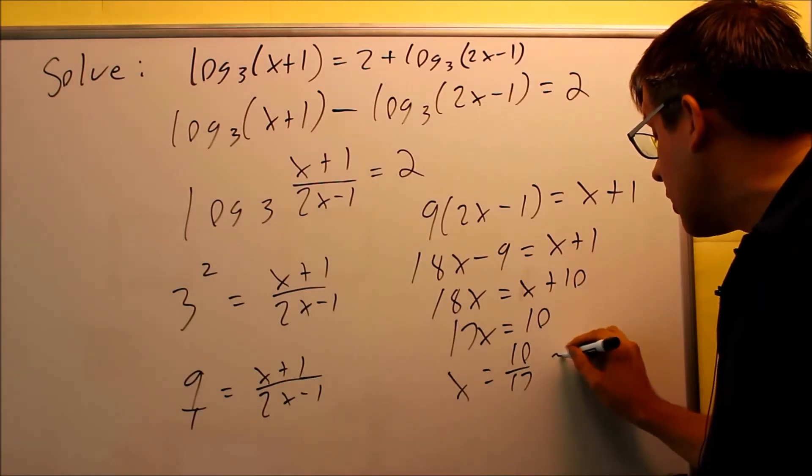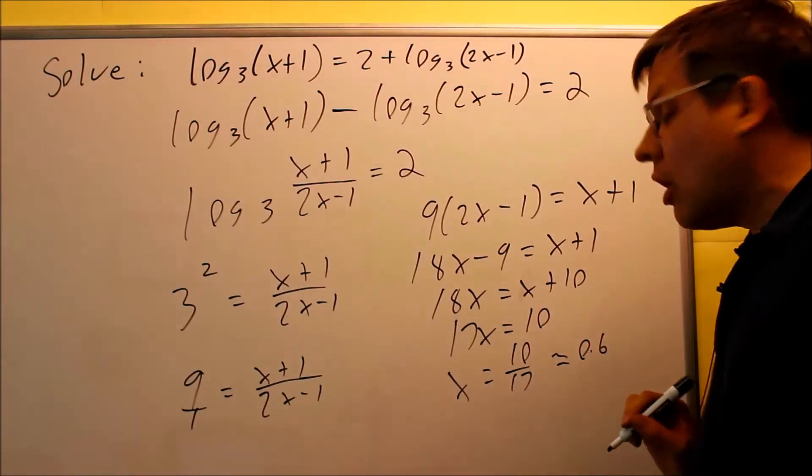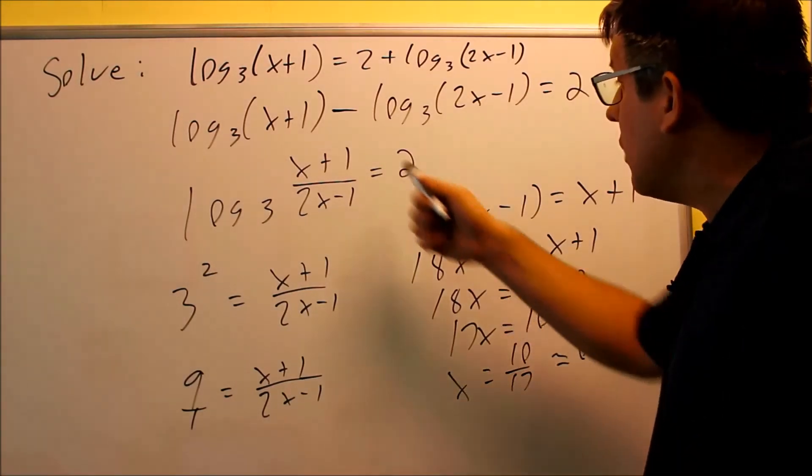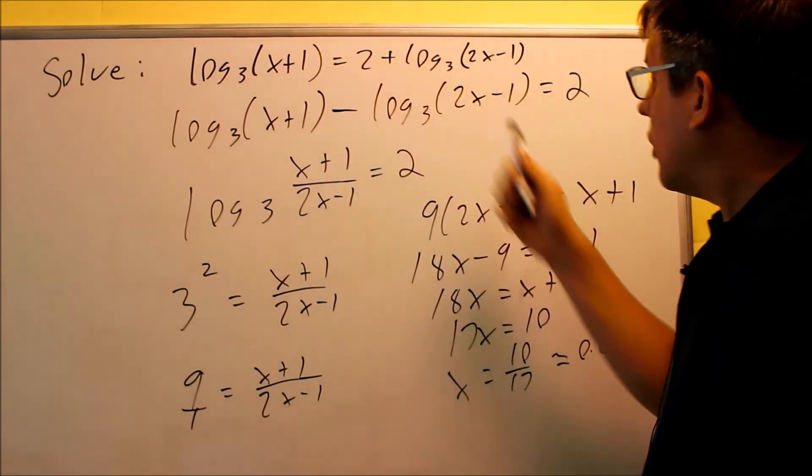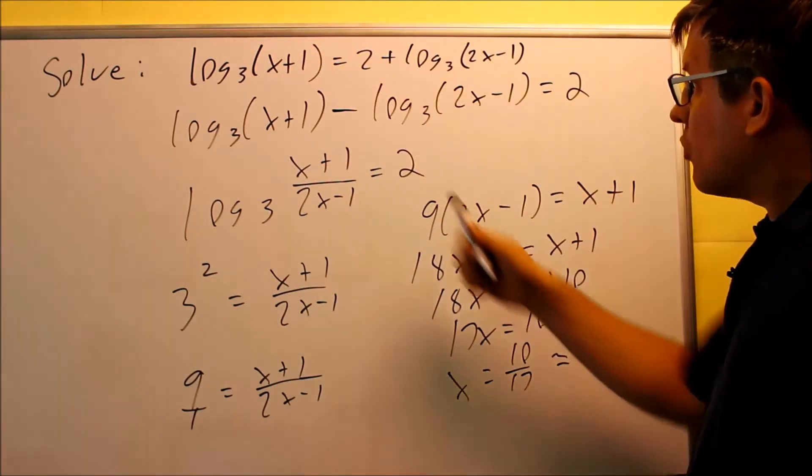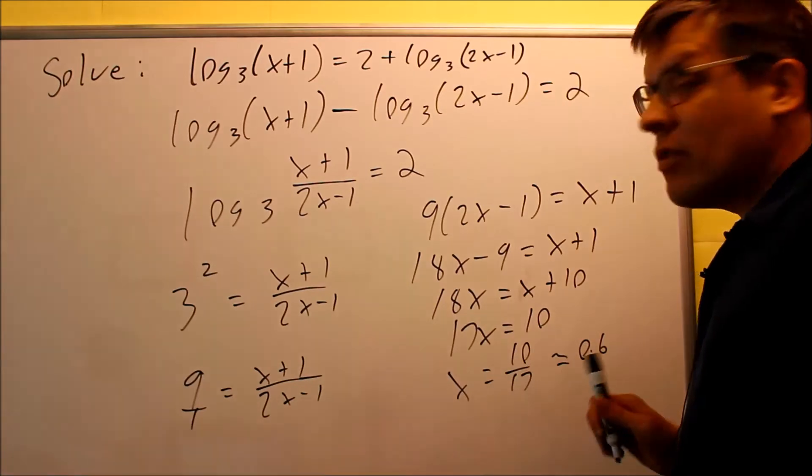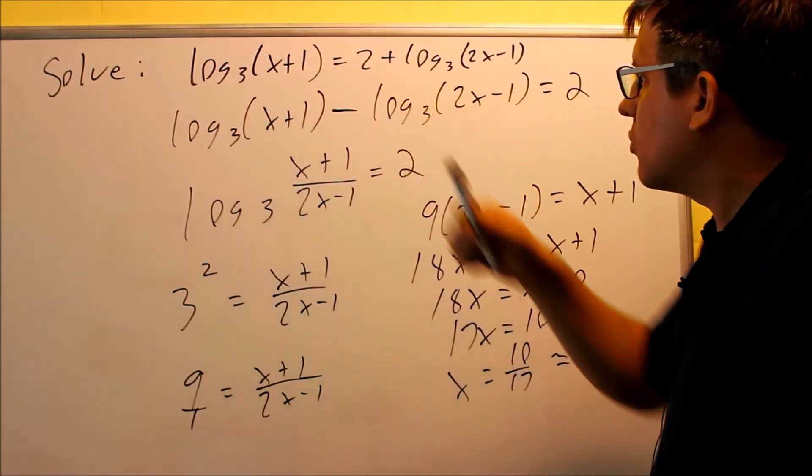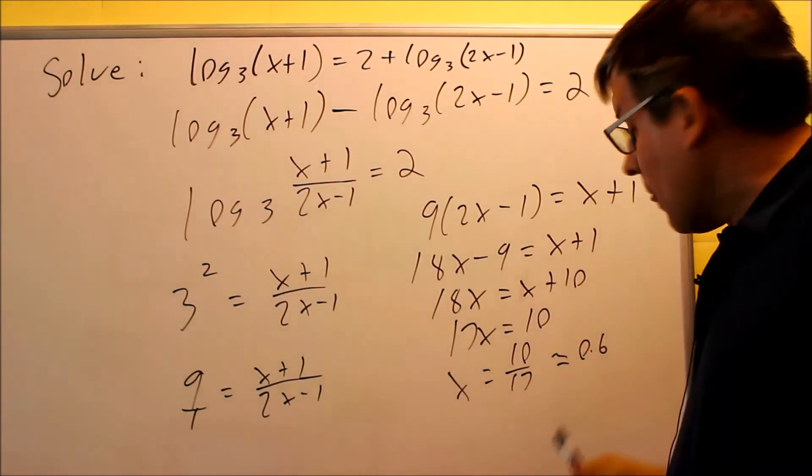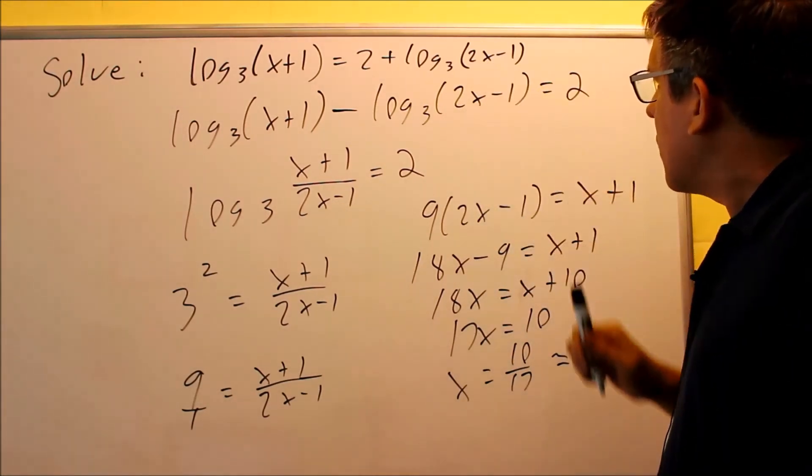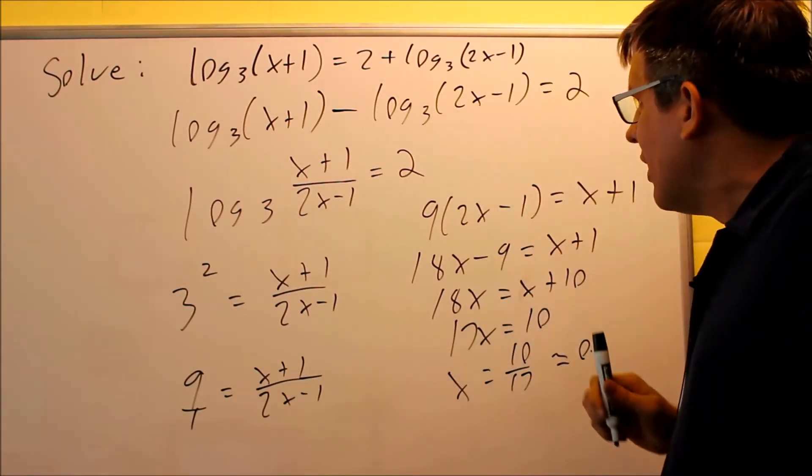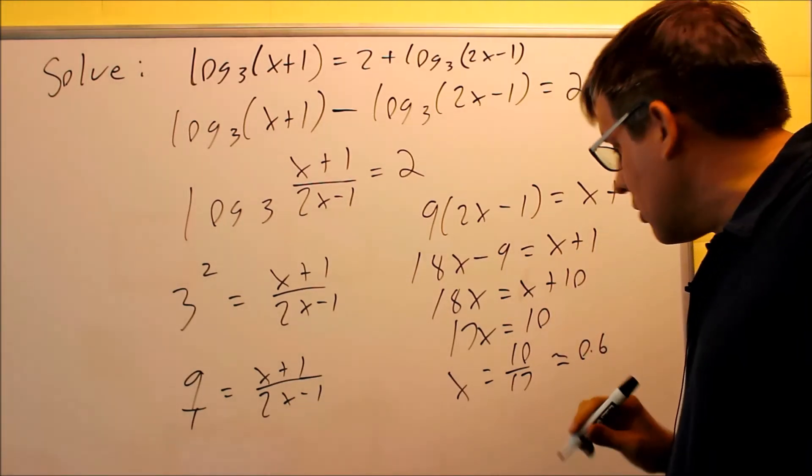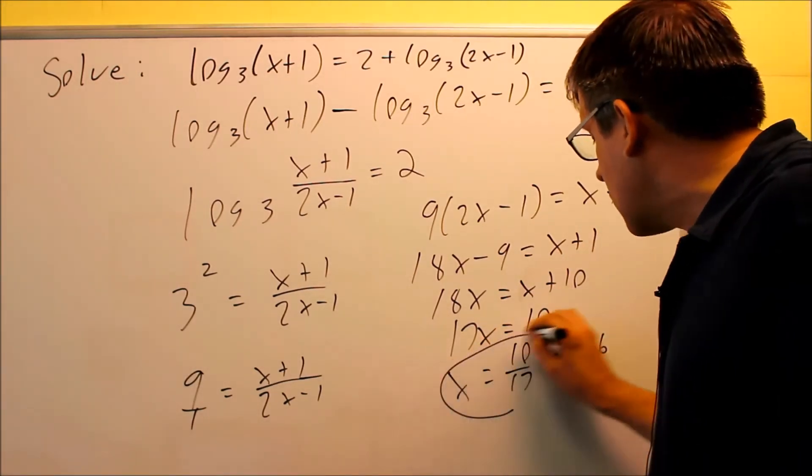Now if you were to put that into a calculator, that would be approximately equal to 0.6. Now 0.6, you can estimate it with the original one. We want to know what that decimal is because we need to know whether 10 seventeenths actually works or not. So if you put 0.6 in here, 0.6 plus 1, that's a positive number. 0.6, 2 times 0.6 would be 1.2 minus 1. That gives you a positive number also. So that means that this answer would work.